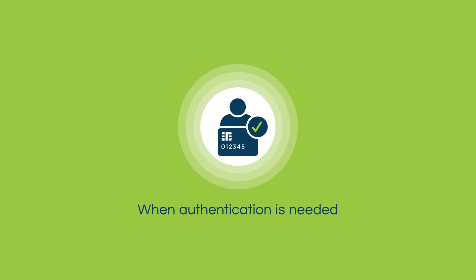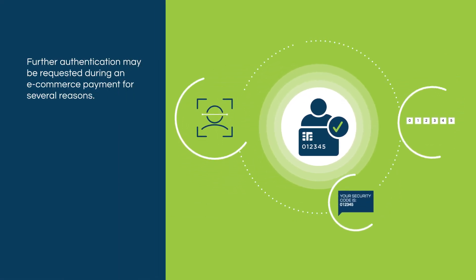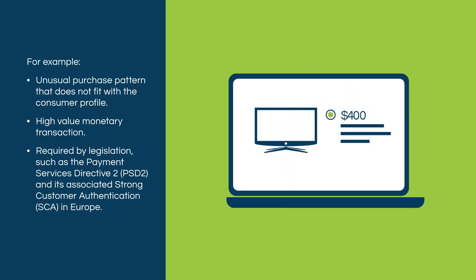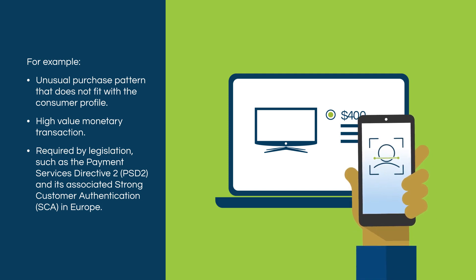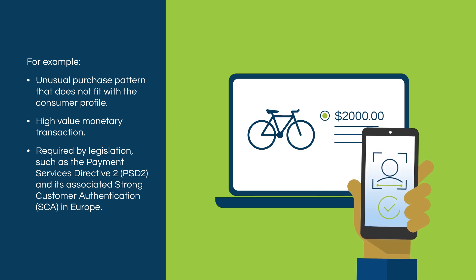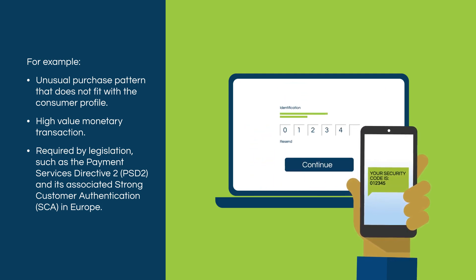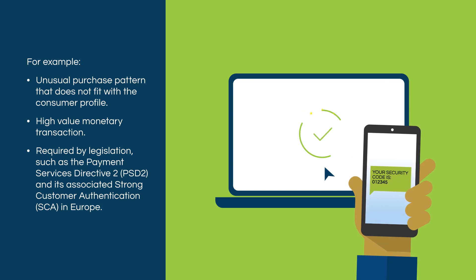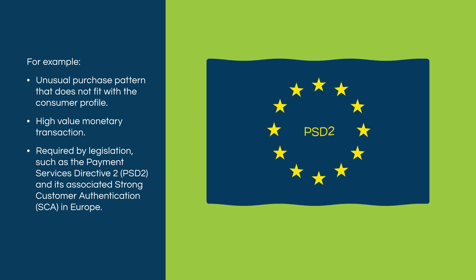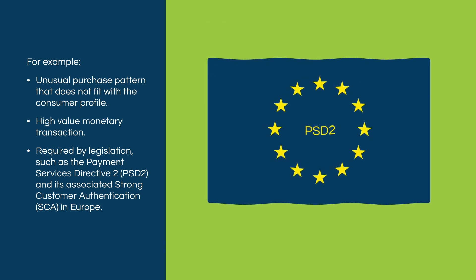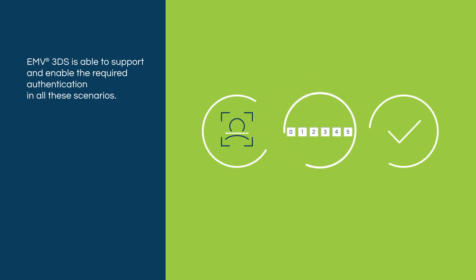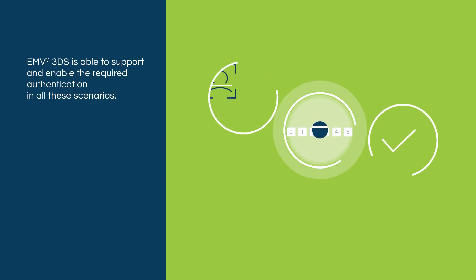Further authentication may be requested during an e-commerce payment for several reasons — for example, an unusual purchase pattern that does not fit with the consumer profile, or a high-value monetary transaction. It may also be required by legislation, such as the Payment Service Directive 2 and its associated Strong Customer Authentication in Europe. EMV3DS is able to support and enable the required authentication in all these scenarios.